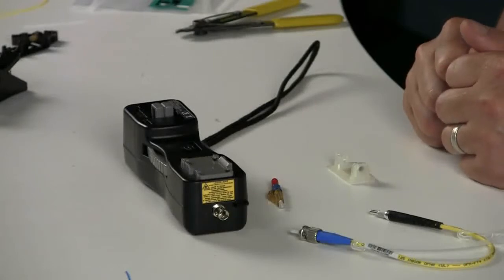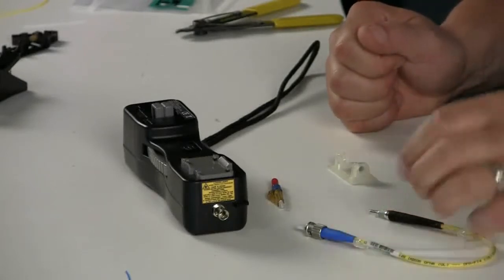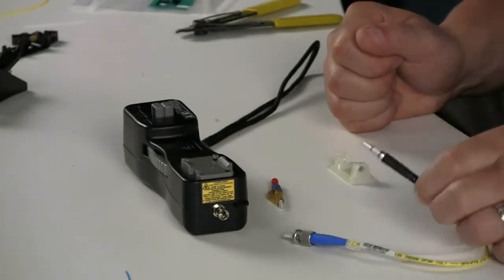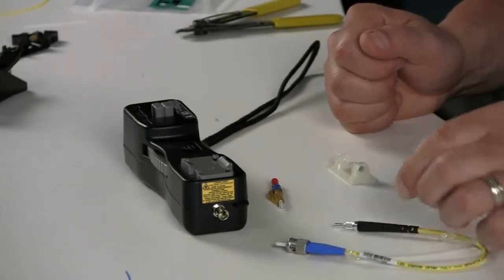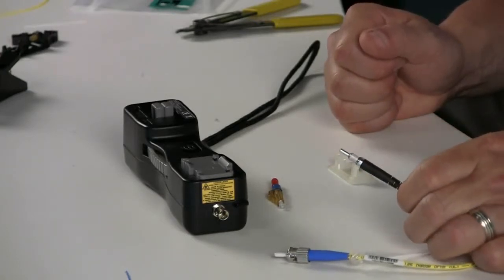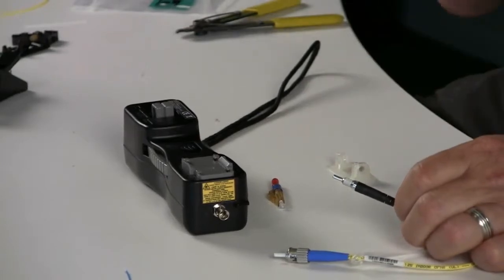To do an OptiCam termination, there are two patch cords associated with it. One is a 1.25 mm patch cord for LCs and one is a 2.5 mm patch cord for ST and SC.